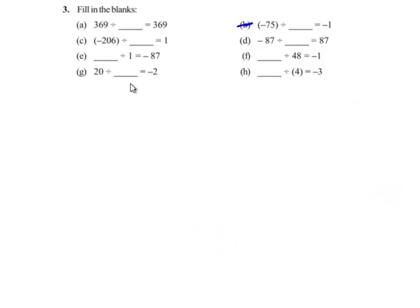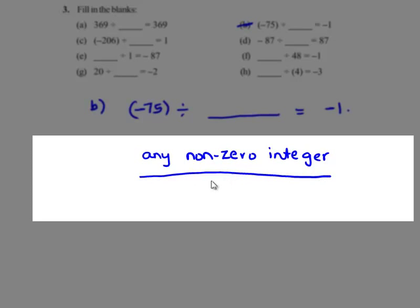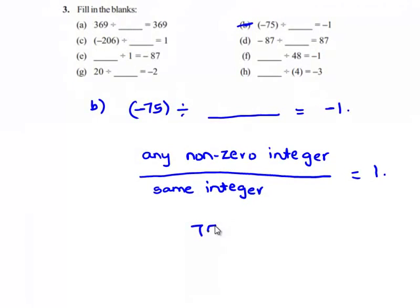We will see the second problem. The question is: negative 75 divided by some integer gives negative 1. We know that when any non-zero integer is divided by the same non-zero integer, we get 1. When we divide 75 by 75, we get 1. When we divide negative 75 by negative 75, we also get 1.